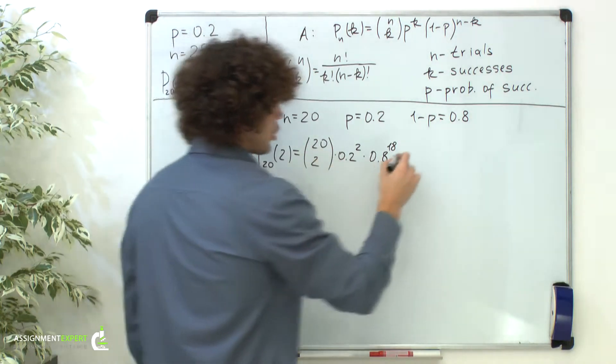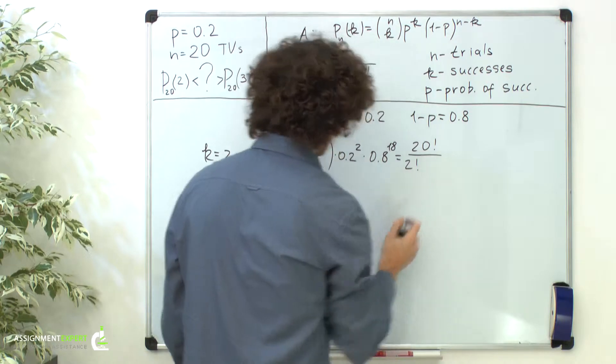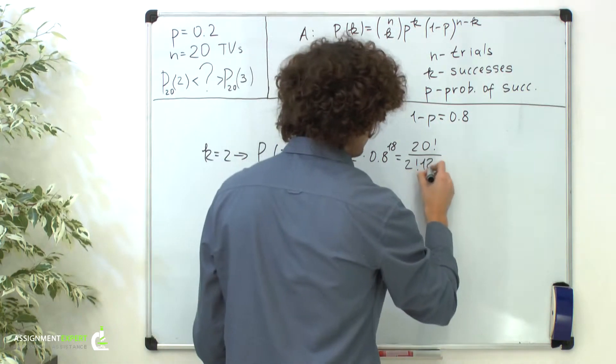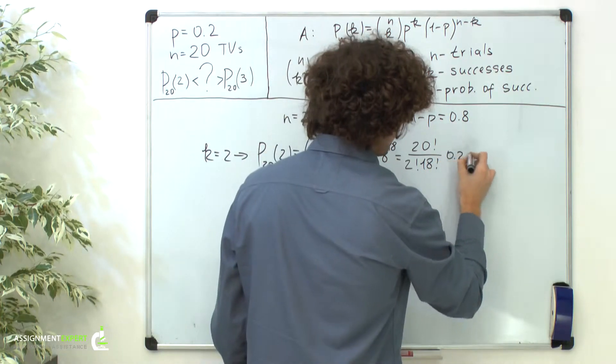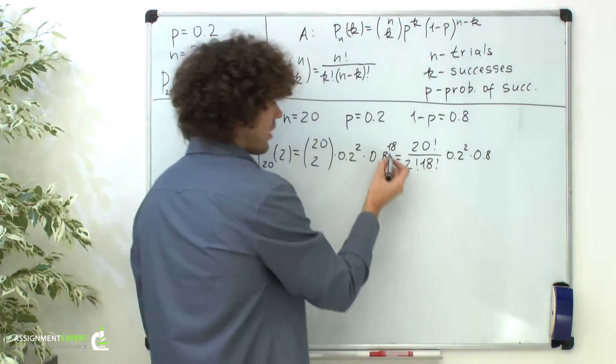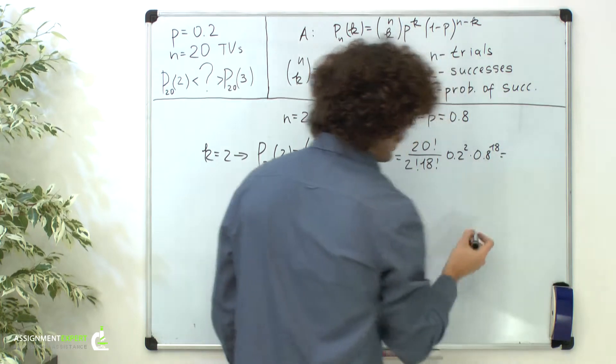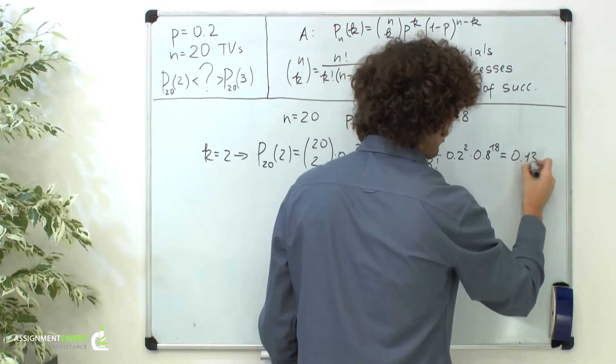This gives us 20 factorial over 2 factorial times 18 factorial, times 0.2 squared, times 0.8 raised to the 18th power. And this equals 0.137.